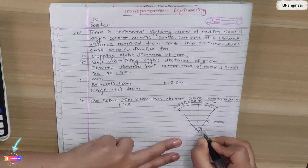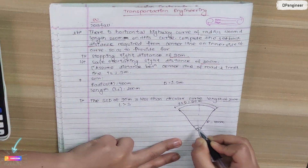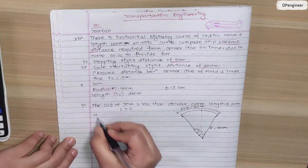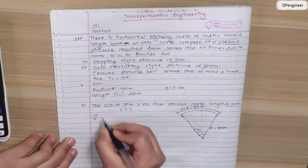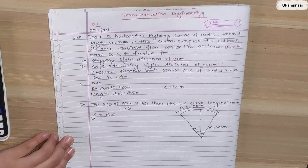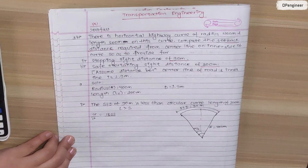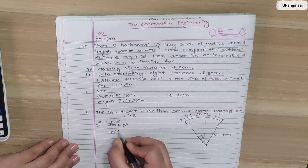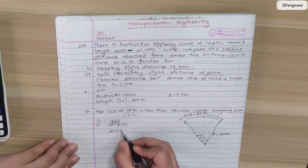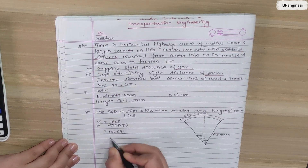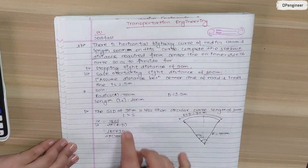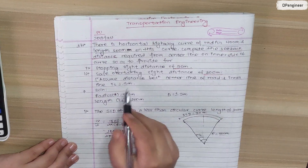For the alpha angle, alpha by 2 is computed using the formula: alpha = 180s / (2 pi R). With s = 90m and radius = 400m, we substitute these values to find alpha.